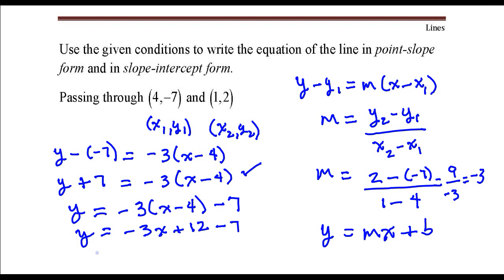Then one more step. y equals negative 3x plus 5, and that is slope-intercept form.